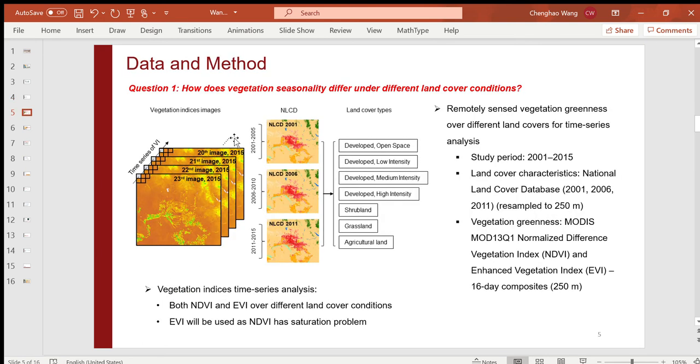To answer the first question, I retrieved remotely sensed vegetation and land cover datasets for the period of 2001 to 2015. The land cover datasets are NLCD datasets. Vegetation datasets are MODIS NDVI and EVI datasets which have a temporal resolution of 16 days and spatial resolution of 250 meters.